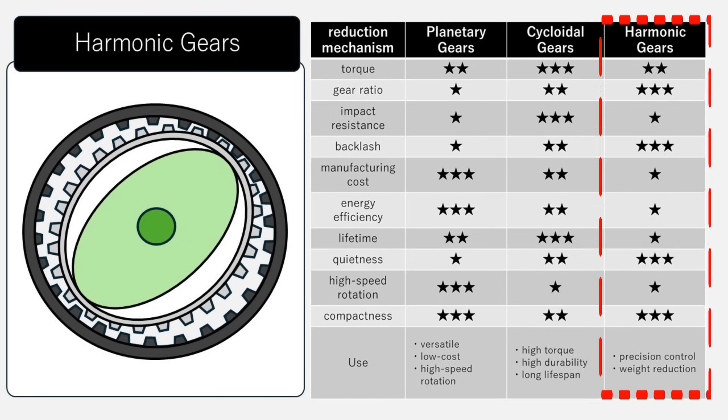Harmonic gears: their most prominent characteristic is incredible precision. They have nearly zero backlash and are therefore often used in robotic arms.